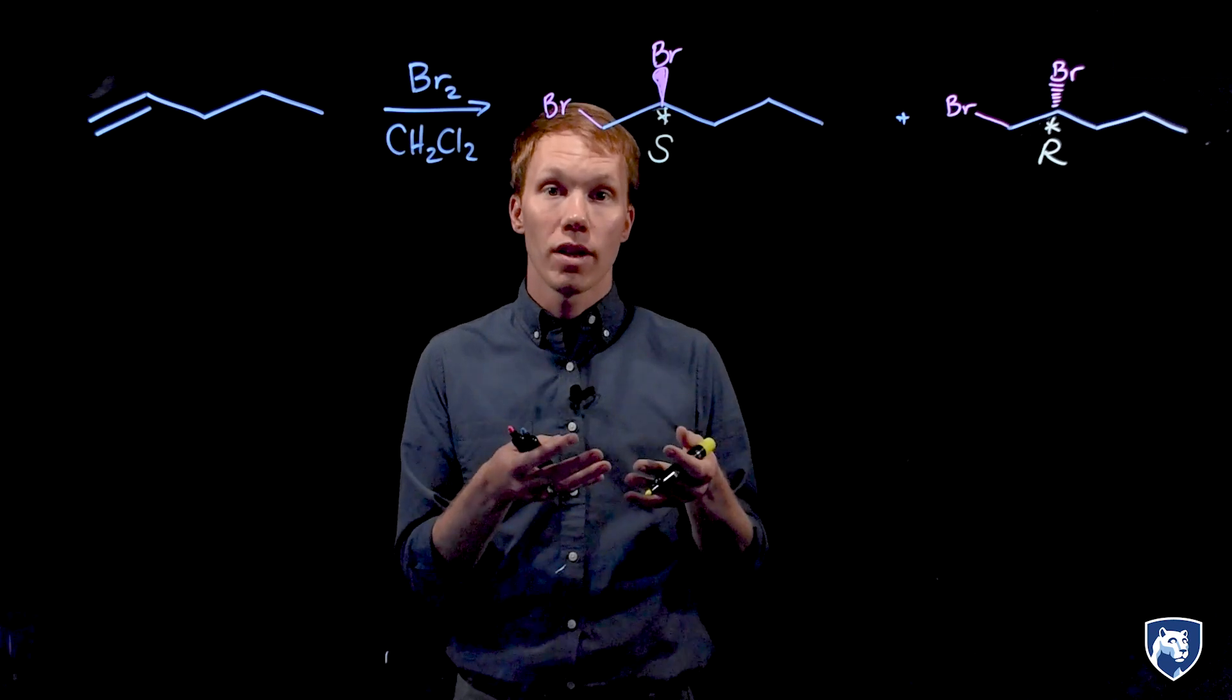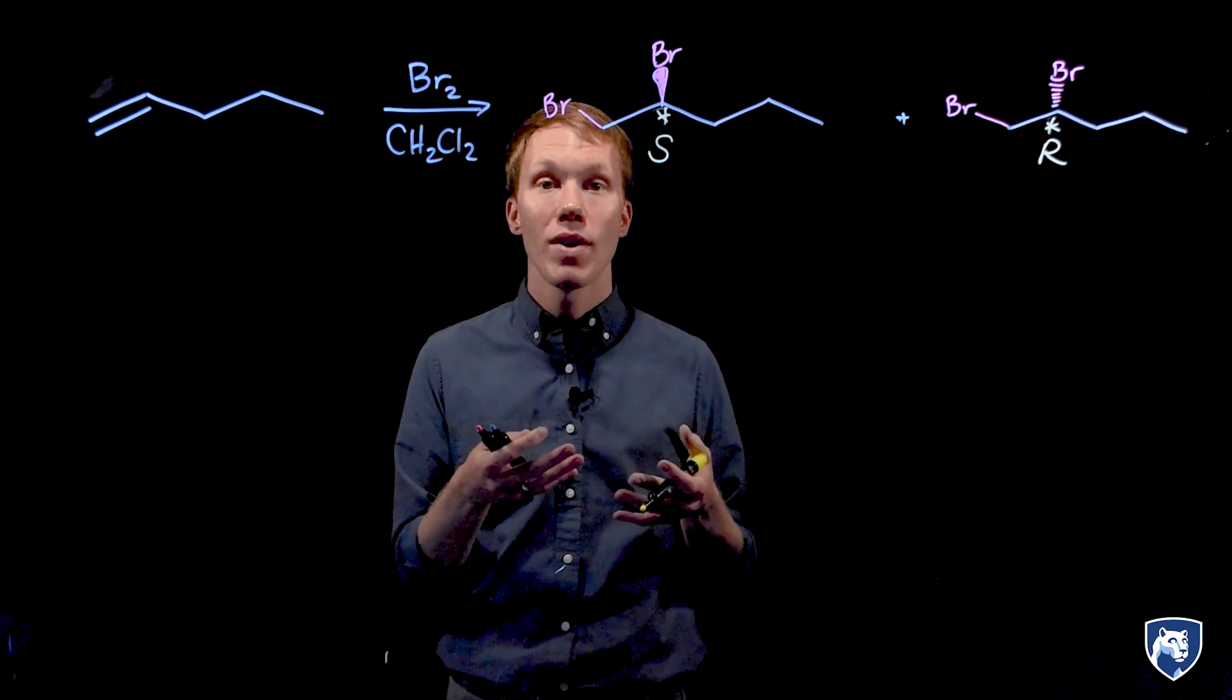We see experimentally that these two enantiomers are produced in equal amounts. When we have a mixture that is equal parts of two enantiomers, it is known as racemic.